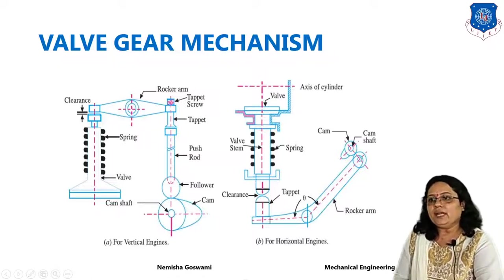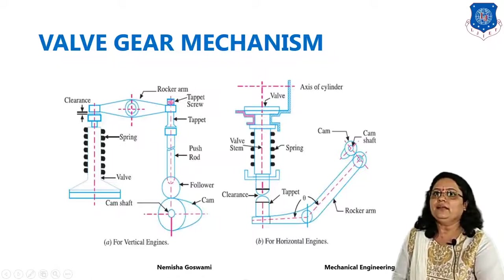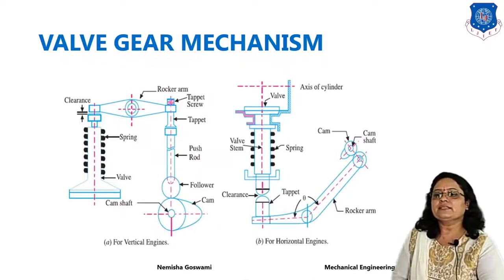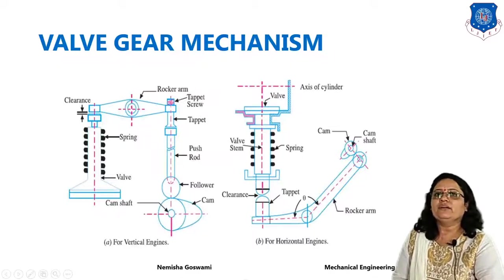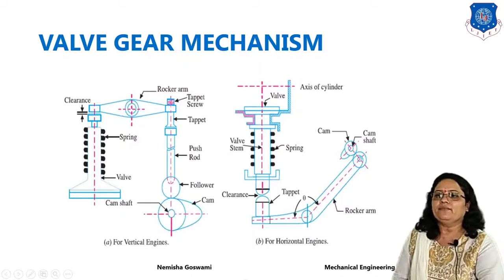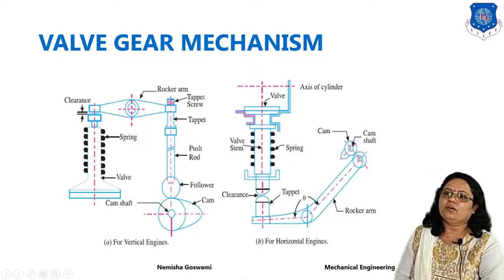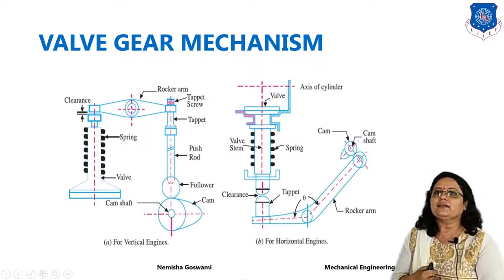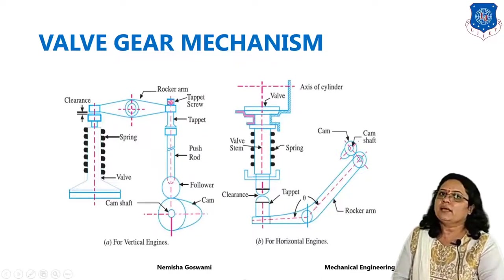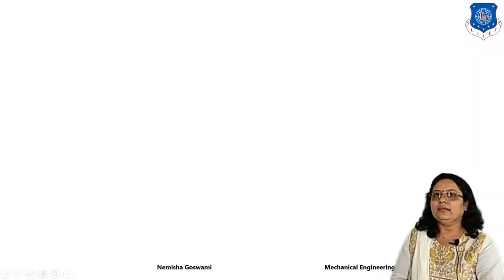What happens to the spring? It will compress, and the valve will open. Similarly, when the cam moves in the downward direction, the spring will extend upward, and in that case the valve will close. This is the basic fundamental of the valve gear mechanism, and the same principle applies to horizontal engines as well.